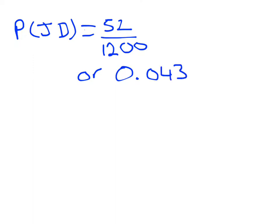We can say the probability of an apple being a Jazz apple and diseased is 52 out of the 1,200 in the sample. Or if you want to write it as a decimal, that would be 0.043.